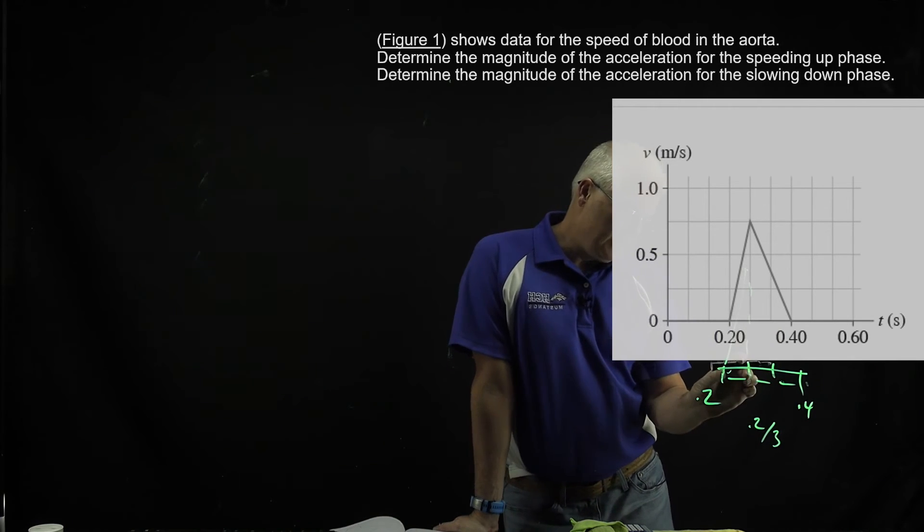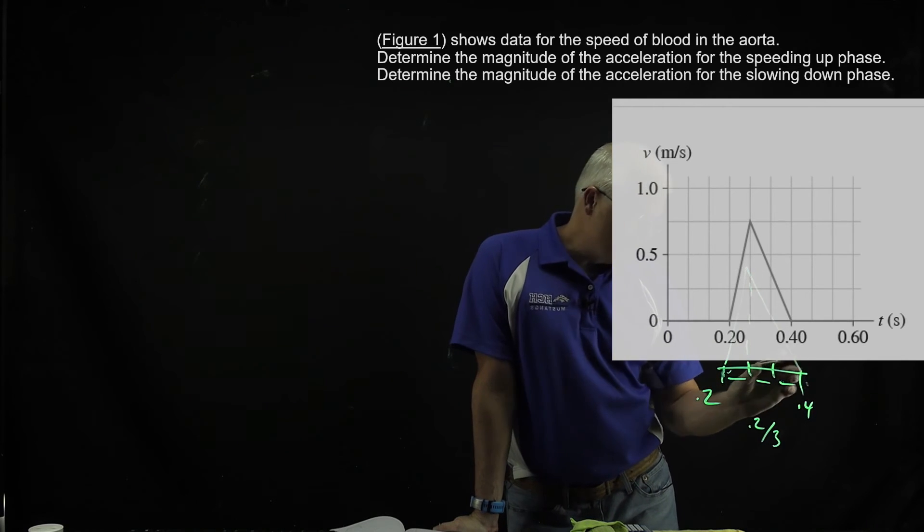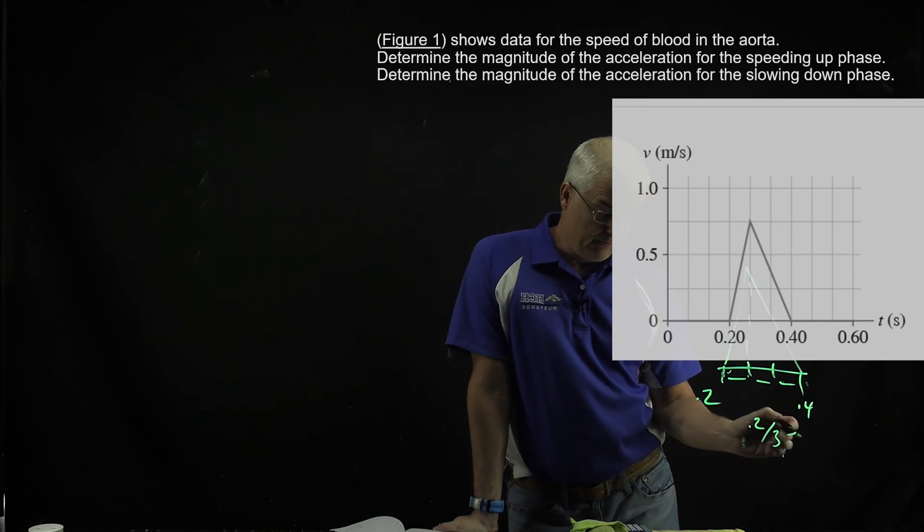...that your time change is just this amount. And when you go from here to here, your time change is double of this amount, which is this amount when you figure out whatever this number is.